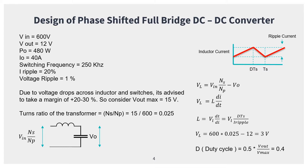The voltage across the inductor equals V_in × (Ns/Np) = 600 × 0.025, minus 12 V, which gives 3 V. The duty cycle D = 0.5 × V_out / V_max = 0.4.